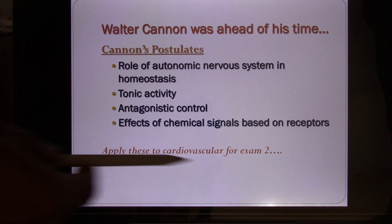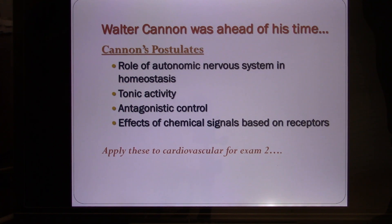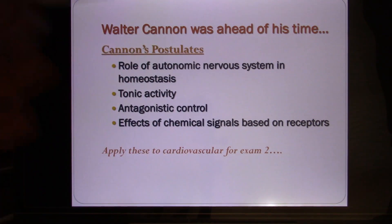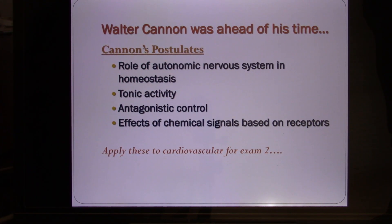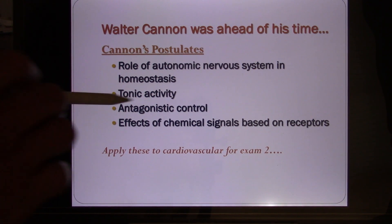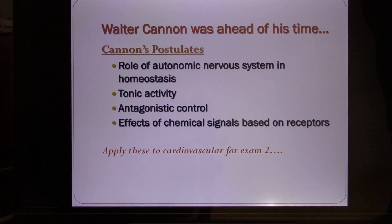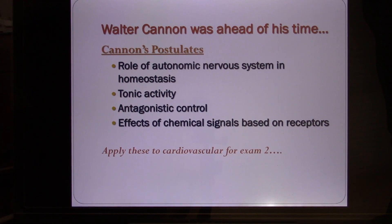After 100 years, we still find his predictions are correct. He predicted your body must have a nervous system whose job is to maintain homeostasis. We now know this is called the autonomic nervous system — not under your voluntary control. It has tonic activity, constantly maintaining your blood pressure, heart rate, osmolarity, breathing rate, body pH, blood sugar level, and glomerular filtration rate in your kidney. It also has antagonistic control — one system increases something while the other decreases it.